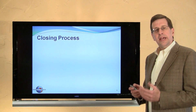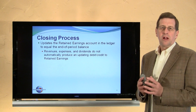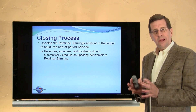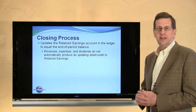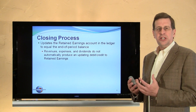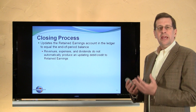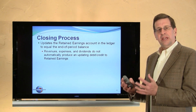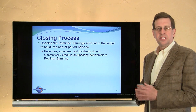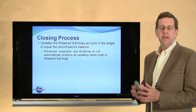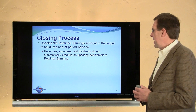Moving on to the closing process. As we consider why the closing process is necessary, it's important to recall that accounting information is for periods of time. Income statements and operating statements reflect revenues and expenses for a particular period of time. What we have in the ledger are accounts that reflect revenues and expenses for the period. That information needs to be closed out before you begin another accounting period — the revenue accounts and expense accounts need to be reset to zero so that what will be captured in the ledger going forward is information about revenues and expenses for the next accounting period.